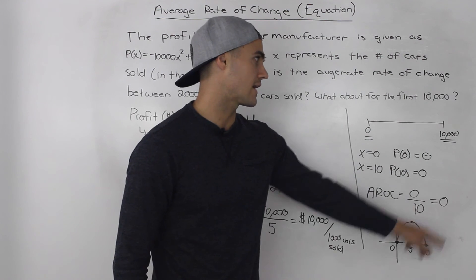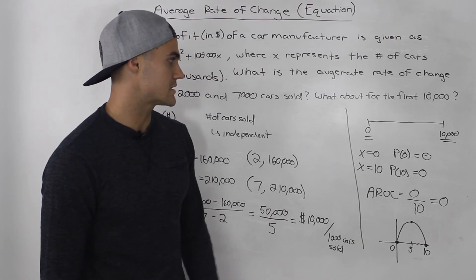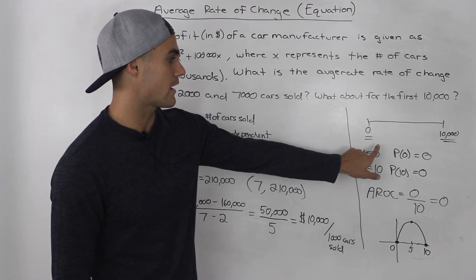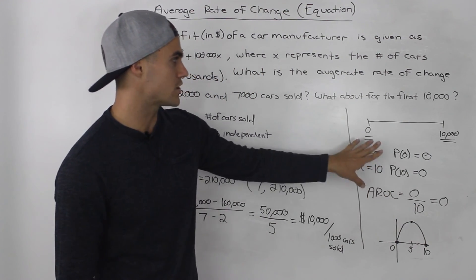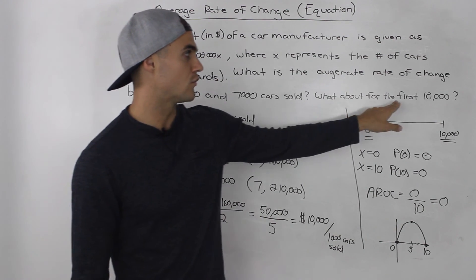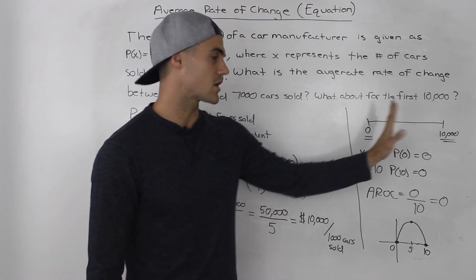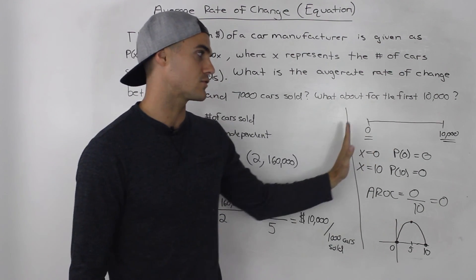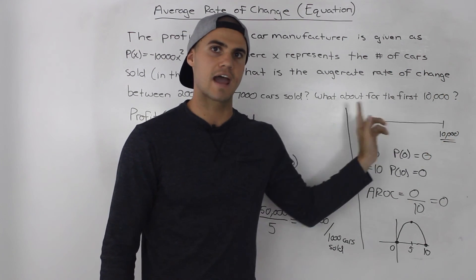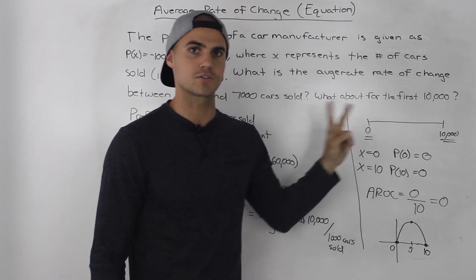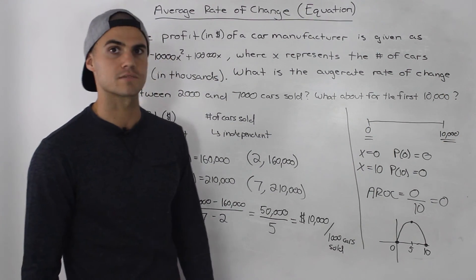The main takeaway is that whenever you're given 'the first X amount,' it's always between 0 and that amount, because the average rate of change is always between two points.